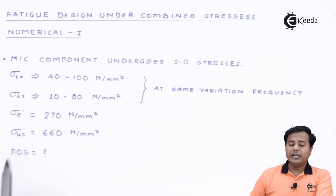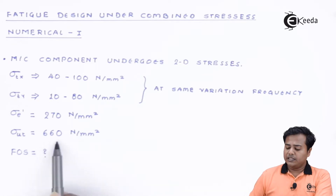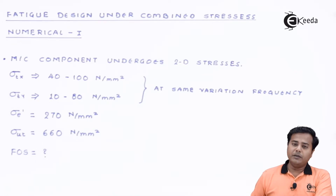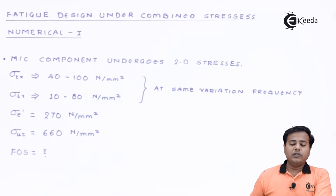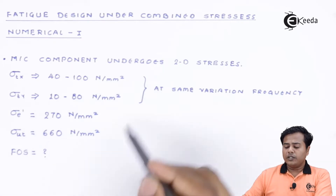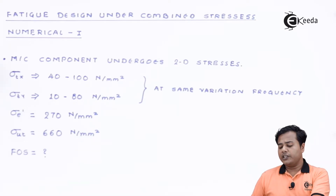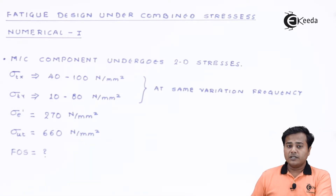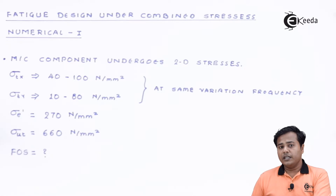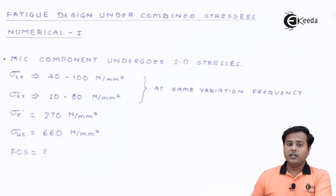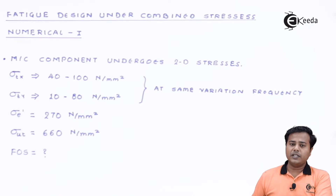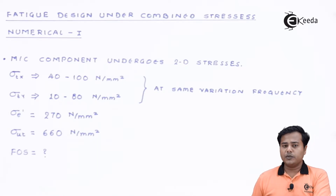The ultimate tensile strength of this material is given as 660 N/mm². The question asks us to find the factor of safety given all these values — the stress ranges, the endurance limit, and the ultimate tensile strength. Let us proceed.